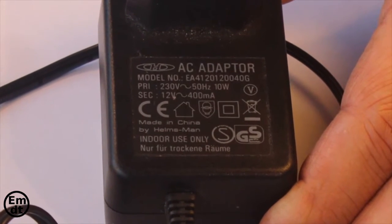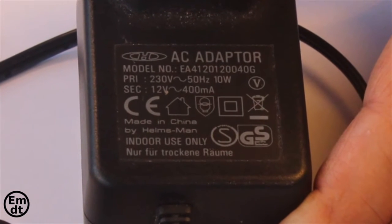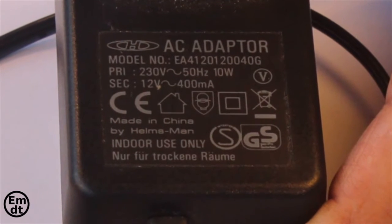On your screen you can see a transformer with a voltage of 12V and 400mA or 0.4A of current or intensity.